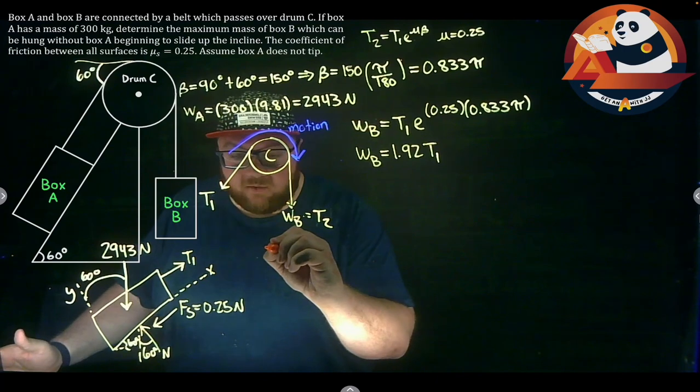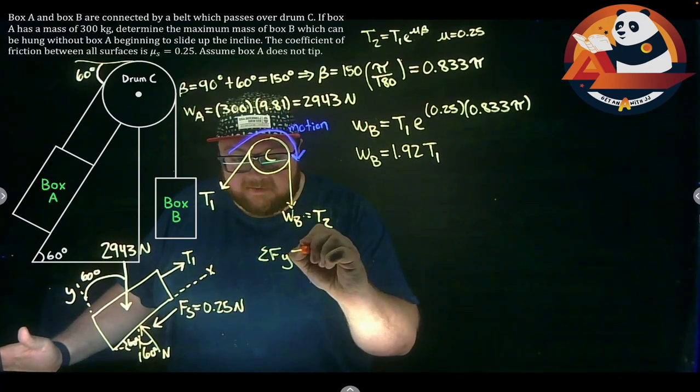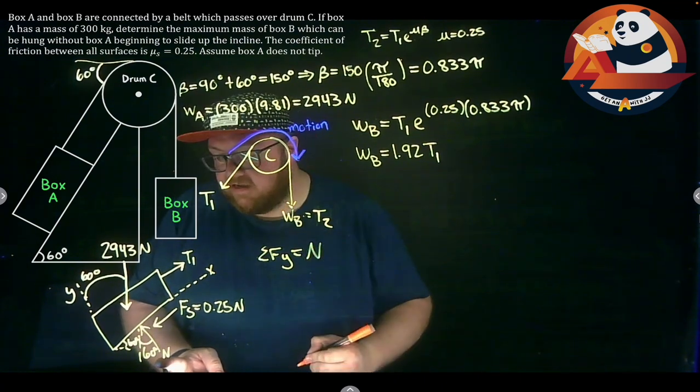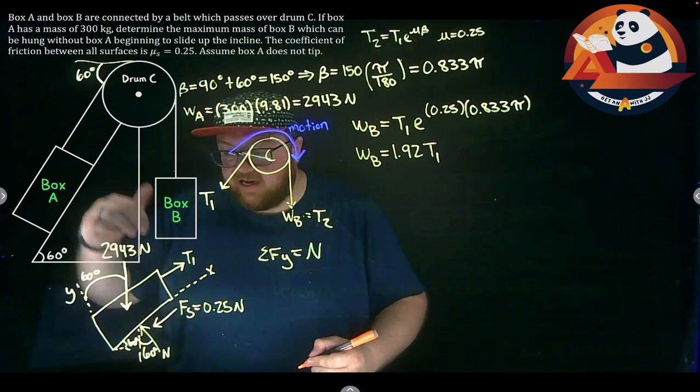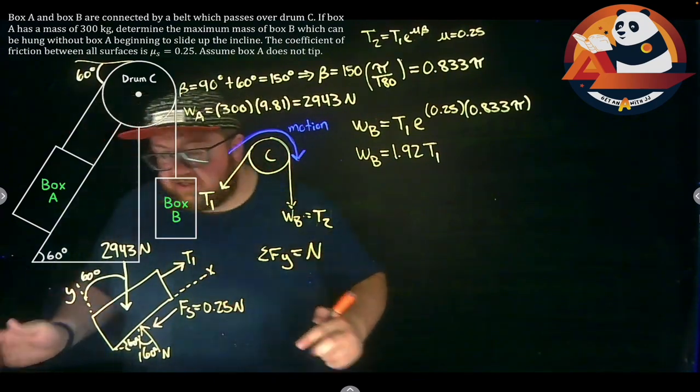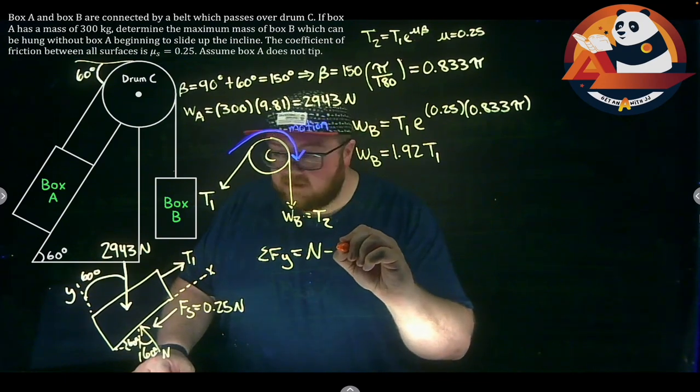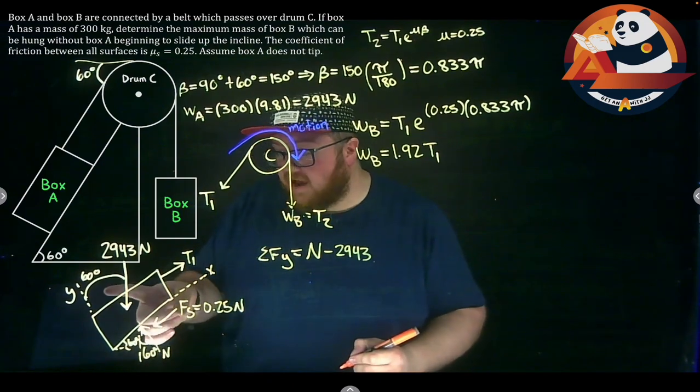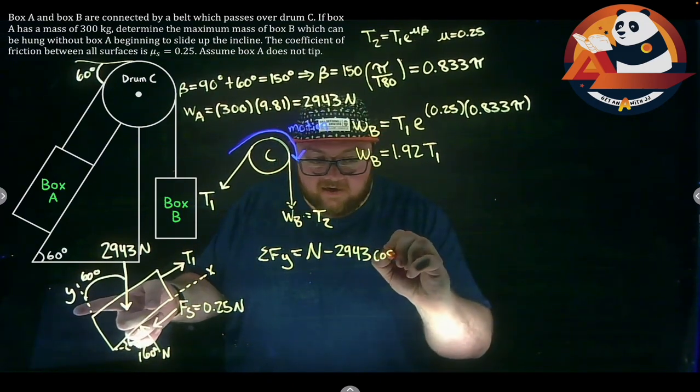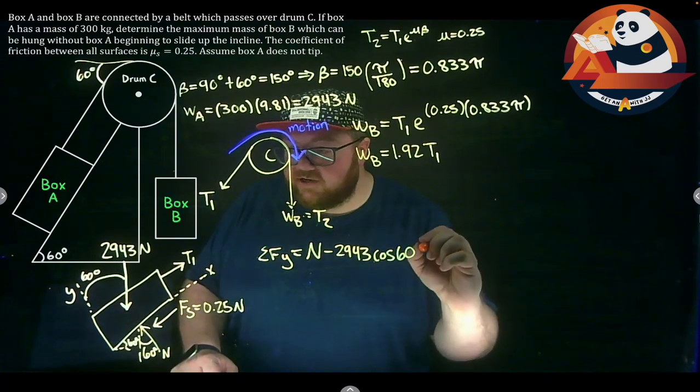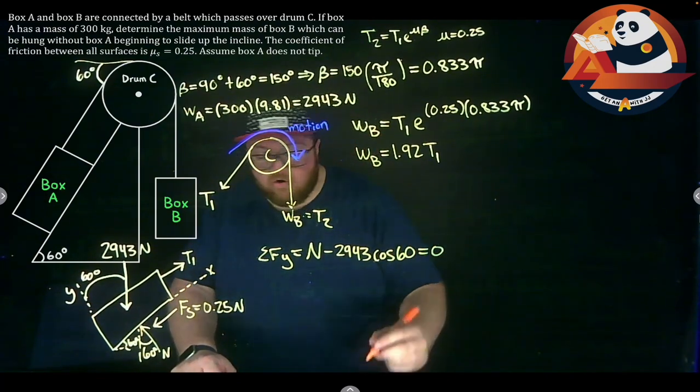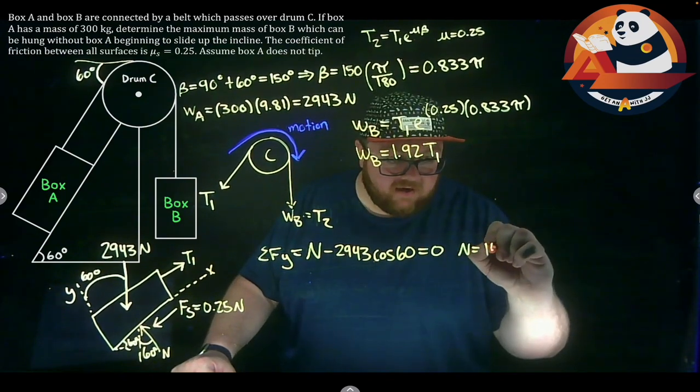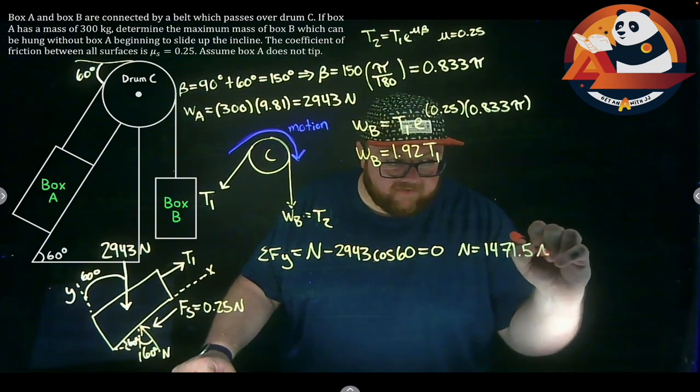I can sum my forces in the y direction. Summing forces in the y, I have, well N's entirely in the y, N. I have the weight, we'll have a y component, it's acting downwards or in the negative y direction, so we're going to subtract this off. Minus 2943 times that angle touches the y, so I need cosine here. Cosine 60 gets me to zero. Or our normal force N is going to get us 1471.5 newtons.